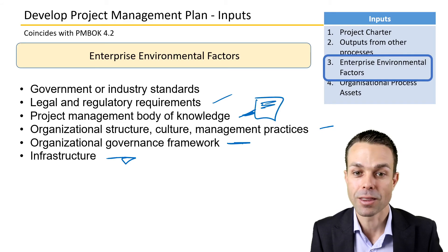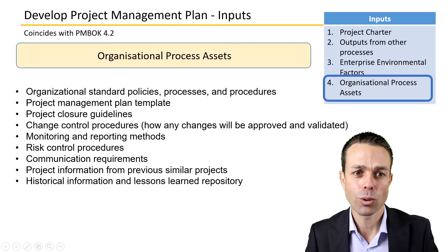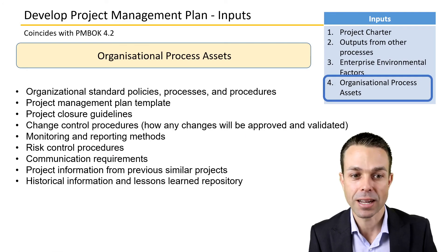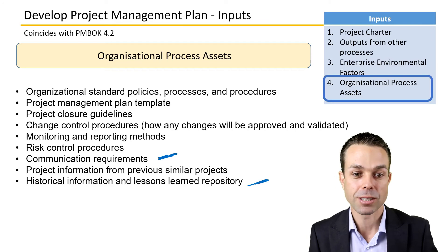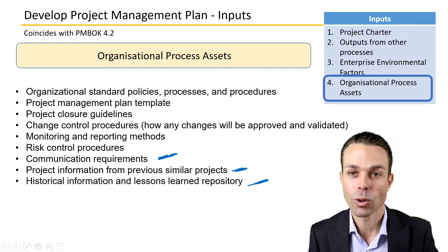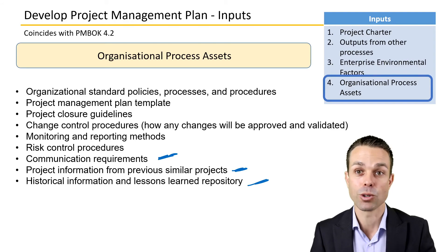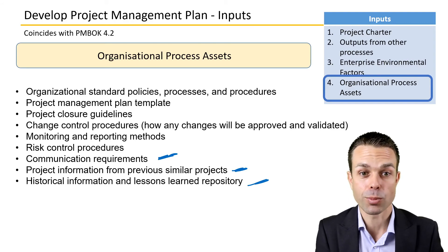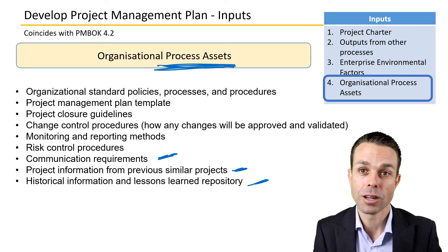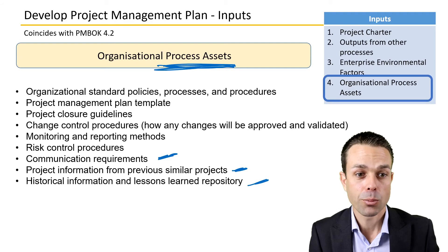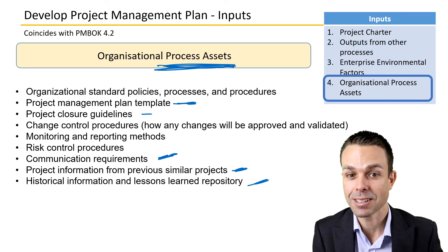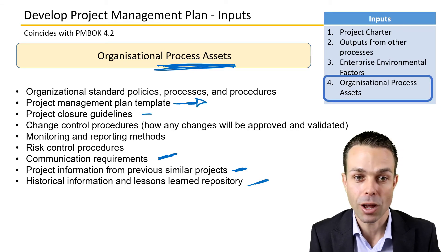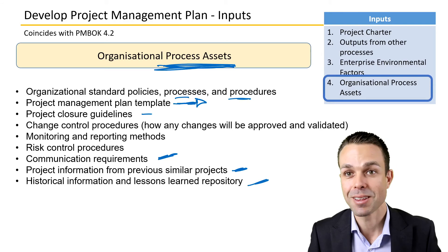The project management body of knowledge itself is a very useful enterprise environmental factor. Organizational process assets include templates, risk procedures, communication requirements, historical information, lessons learned repositories, and project information from previous similar projects. Gathering these process assets is really helpful. There may also be project closure guidelines and existing project management plan templates within an organization.